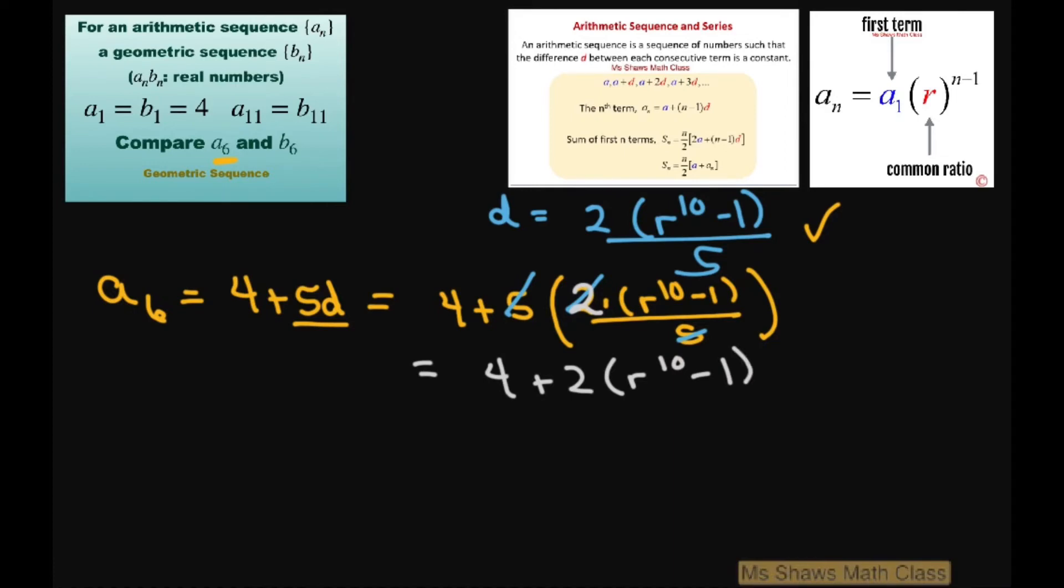Now, simplifying this, if I distribute that 2, we're going to get 2 times r^10 plus 2. Or, we can factor out a 2 and write this as 2 times r^10 plus 1.